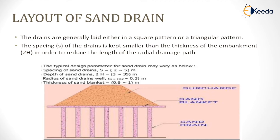Next is the layout of sand drains. The drains are generally laid either in a square pattern or triangular pattern, and the spacing of the drain S is smaller than the thickness of the impermeable layer 2H, in order to reduce the length of the radial drainage path. In the figure you can see vertical drains, over which a sand blanket is provided, and above it a surcharge is applied for consolidation.